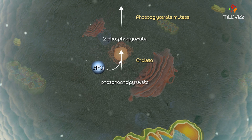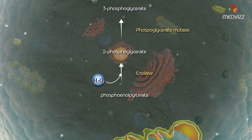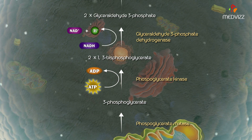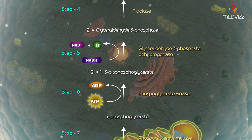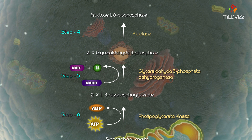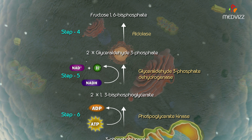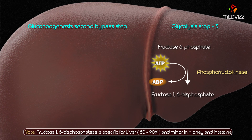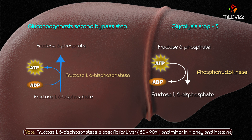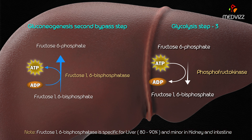Phosphoenolpyruvate then undergoes further reactions catalyzed by glycolytic enzymes — steps 8, 7, 6, 5, and 4 — which are reversible, finally forming fructose 1,6-bisphosphate. The enzyme fructose 1,6-bisphosphatase, present in the liver, then acts on fructose 1,6-bisphosphate to form fructose 6-phosphate, bypassing the PFK1 reaction — step 3 of glycolysis.